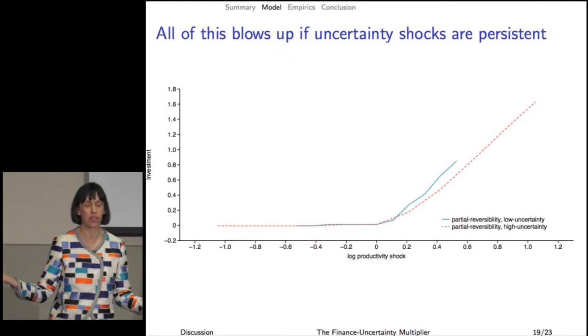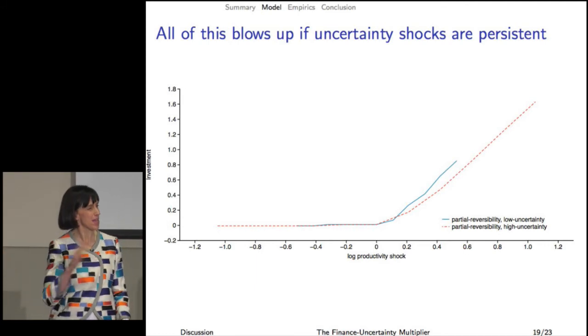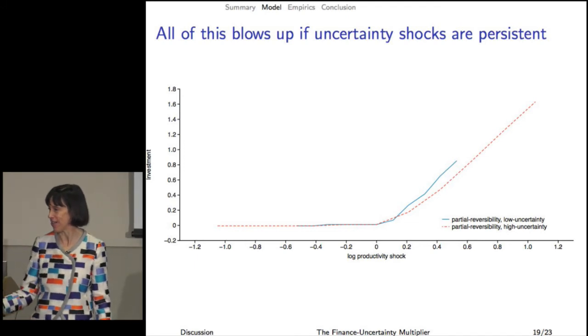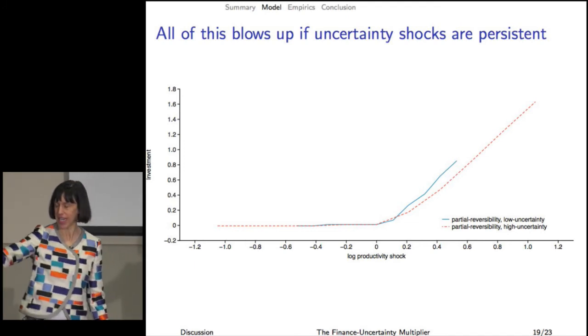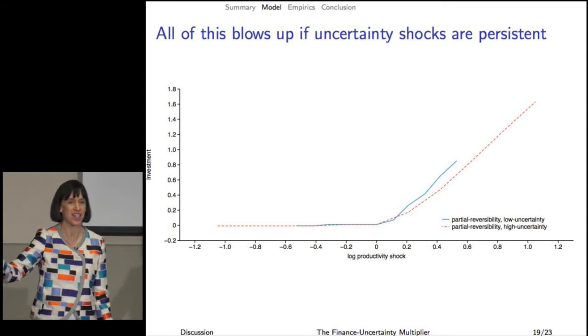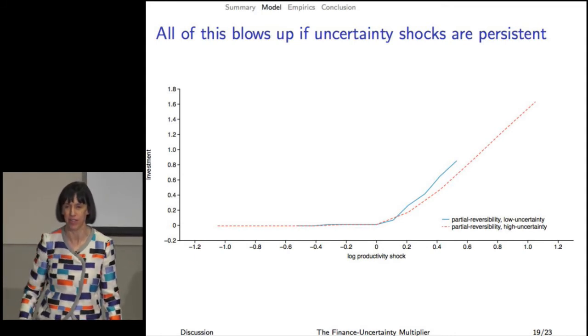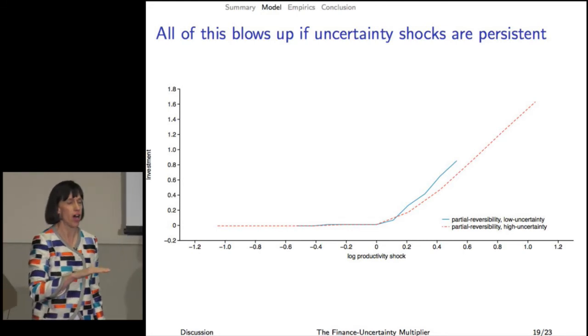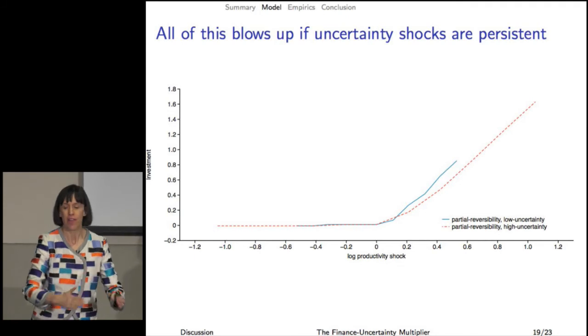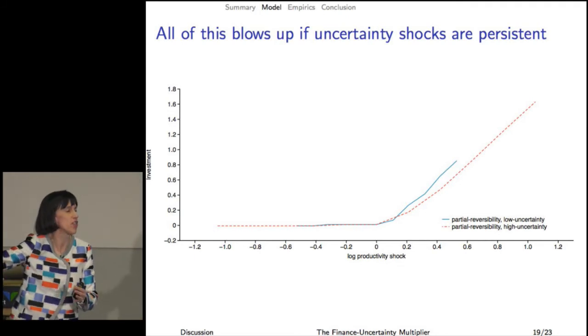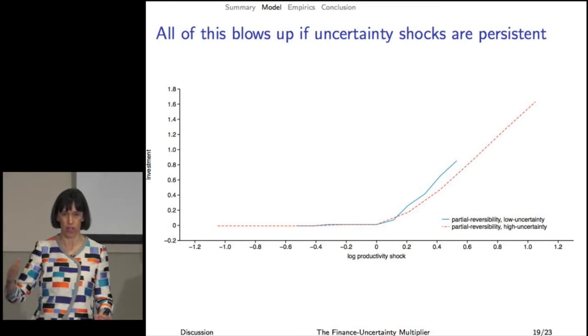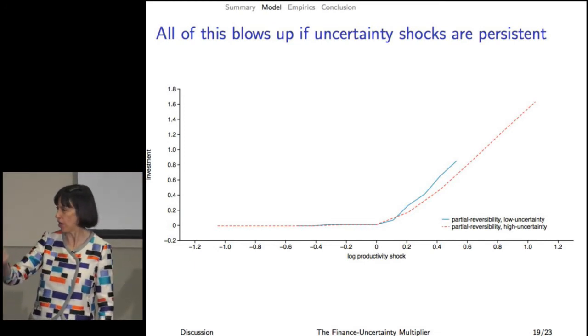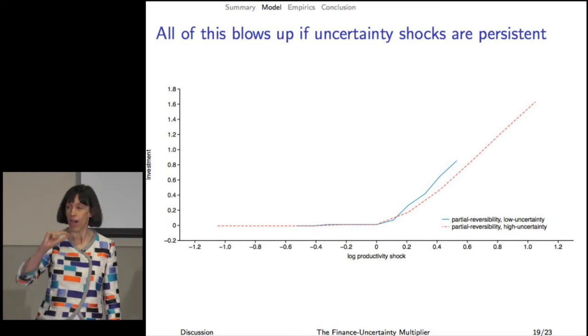Of course all of this blows up if the shocks are persistent. What if a shock only shows up once every 10 years? You see a good shock, you look at the VIX and say this shock means nothing, I'm not responding to it. But what if you know that the world oscillates between stable for 10 years and then uncertain for 10 years? In that kind of world you respond to these shocks in both the low and high uncertainty states. So I urge the authors to think a lot more carefully about whether these uncertainty shocks are here today, gone tomorrow, or whether they're persistent.